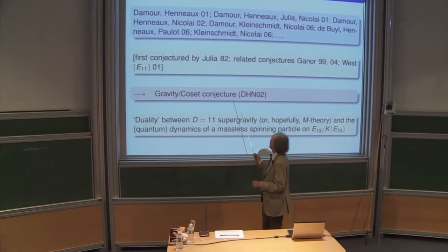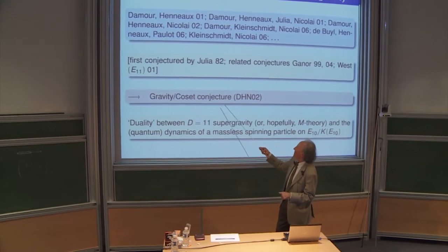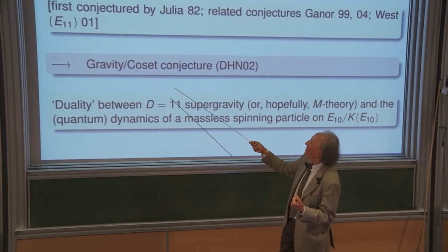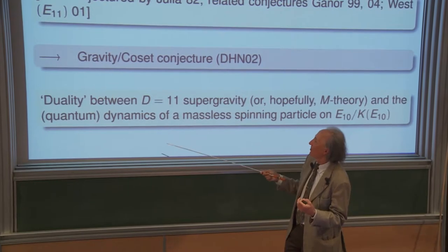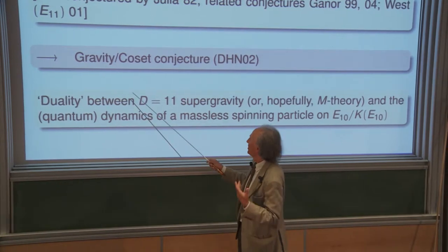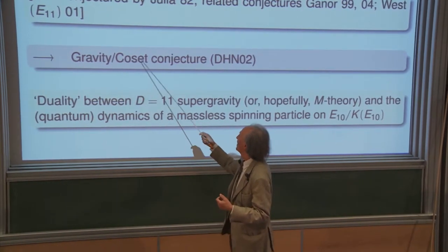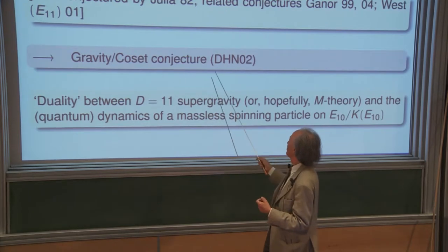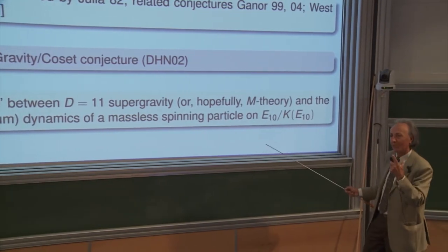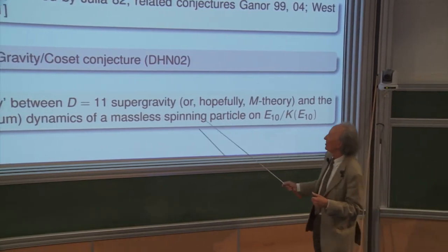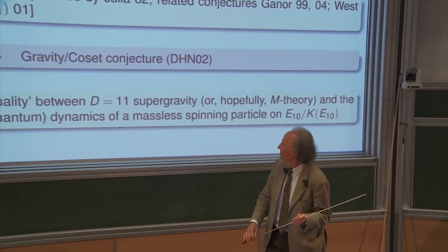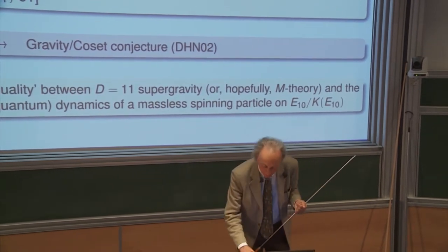We then conjectured with Ehno and Nicolai that there is an equivalence — a duality — between supergravity in 11 dimensions, or more generally M-theory, which contains superstring theory and all extended objects, and something which is a coset based on E10: specifically E10 divided by its maximally compact subgroup. The basic duality is that a certain theory in 11 dimensions is equivalent to the quantum dynamics of a massless spinning particle on this coset space.